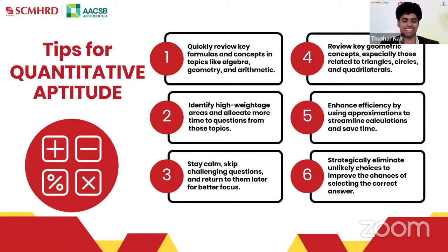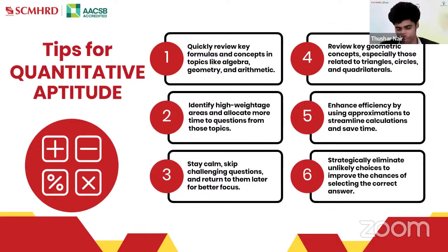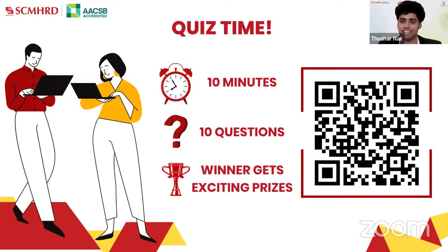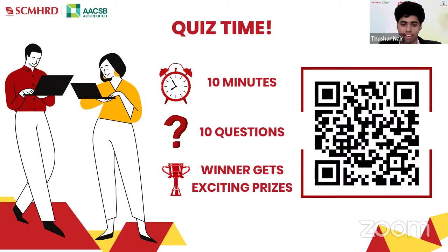Now that we've given you tips for every section, let's put it to the test. We have a small quiz planned with vouchers for the top two winners. Get out your mobile phone, scan the QR code on screen — 10 questions in 10 minutes, just like a mini SNAP mock. There's no negative marking in this quiz, so attempt every question. If you're having difficulty scanning, the link is also pasted in the chat.